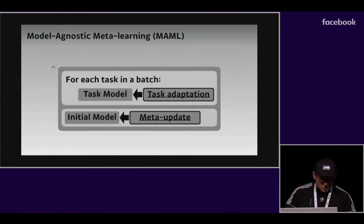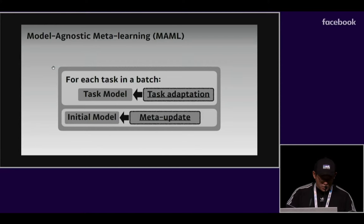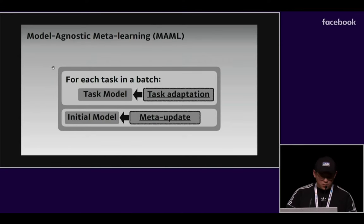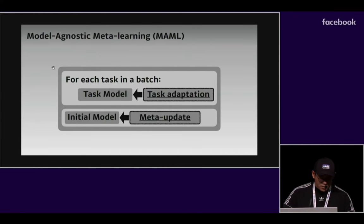MAML consists of two update phases for each task in a batch. It updates the task model through task adaptation, and then, during meta-update, it updates the initial model.